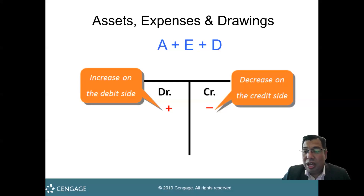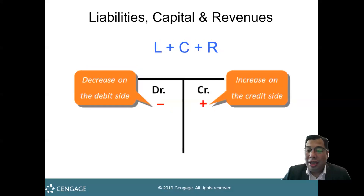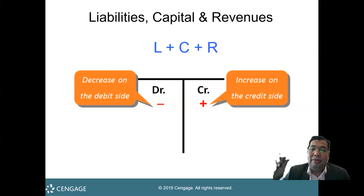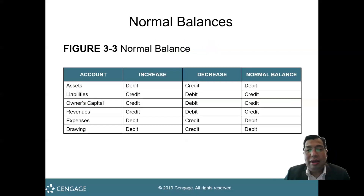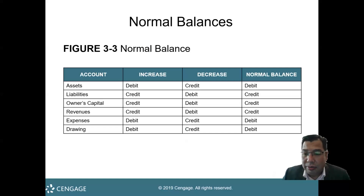Whereas for liability, capital, and revenue, it follows the opposite rule. Any increase in liability, capital, or revenue — you need to credit the account, meaning you put the amount on the right side. Whereas a decrease in liability, capital, or revenue, you put it on the debit side. So the normal balance: for assets, expenses, and drawing, the normal balance is on the debit side. For liability, capital, and revenue, the normal balance is on the credit side. Thank you so much for watching the video.